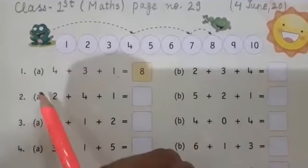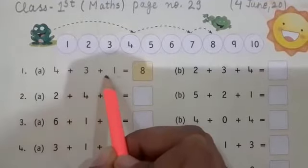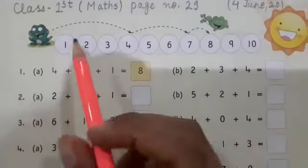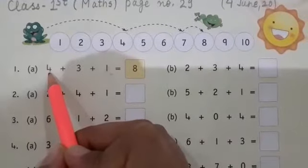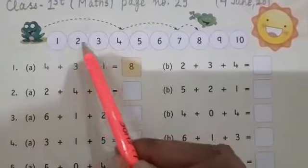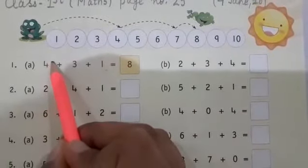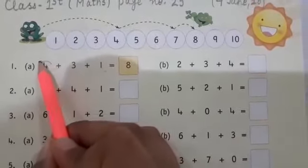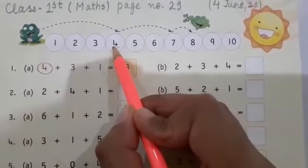What you have to do is, you're given 4 plus 3 plus 1. First, we identify the first number, which is four. You have a row of numbers given, so first you will find where your four is. Which number do we need to find? Four. So here is our four.